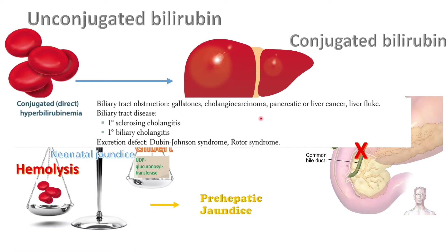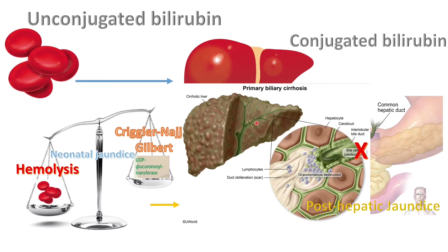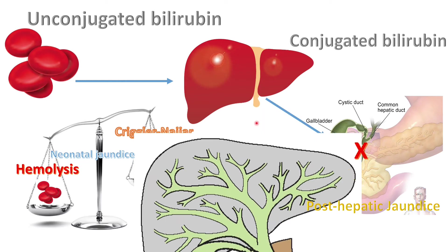Post-hepatic causes include obstruction in the biliary tract or biliary tree disease within the liver. It can also happen when the liver has conjugated bilirubin but cannot excrete it, as in Dubin-Johnson or Rotor syndrome. All of these result in conjugated hyperbilirubinemia. Post-hepatic bilirubin is conjugated and water soluble.